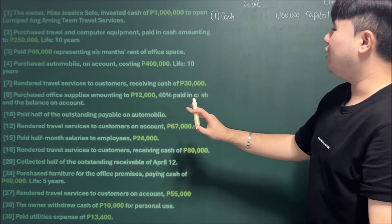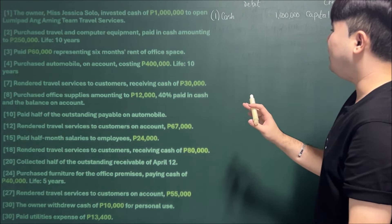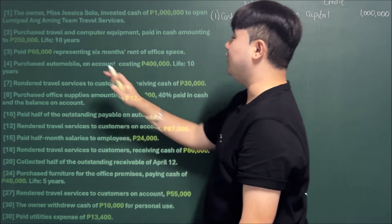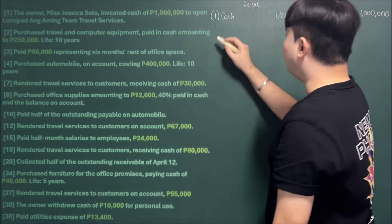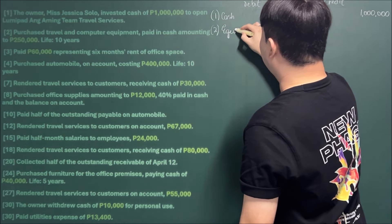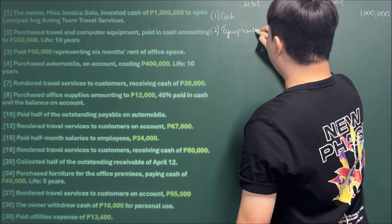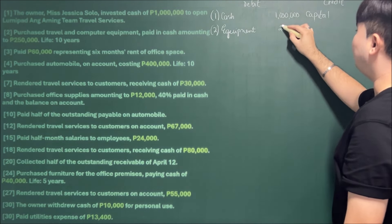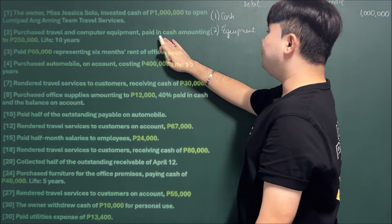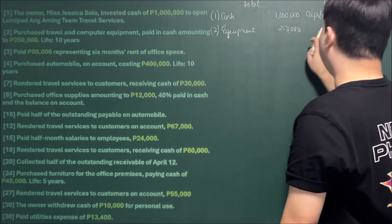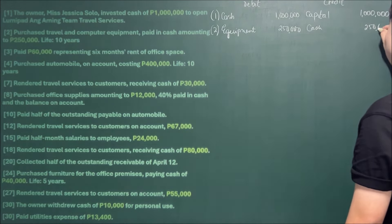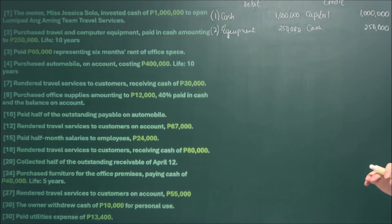Number two: Purchase travel and computer equipment paid in cash amounting to 250,000 — life 10 years. Since we acquired equipment, we debit Equipment for 250,000. The payment was made in cash, so we credit Cash for 250,000.